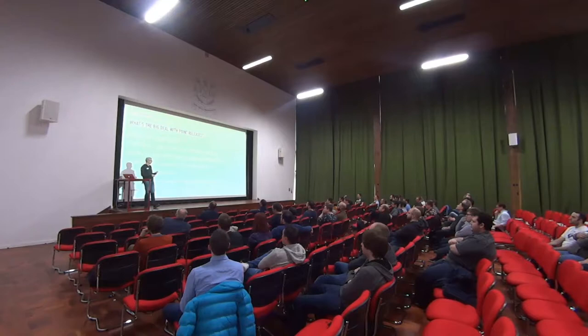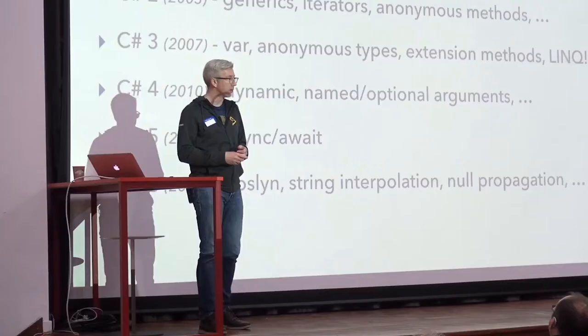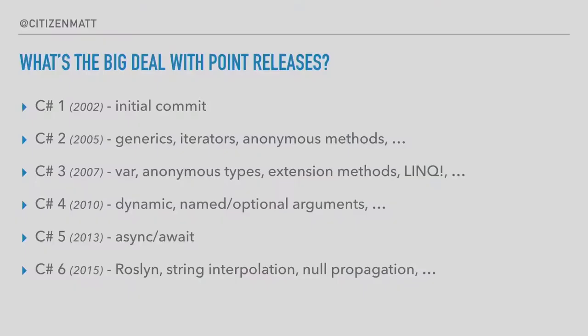If we look back at the history of C#, we'll see mostly major releases. C# 1 in 2002, then C# 2 in 2005 with generics and so on. C# 3 was two years later — arguably the best in the series, clearly the Prisoner of Azkaban of the C# world. VAR, anonymous types, extension methods, combined with anonymous methods gave us a really elegant design for LINQ. It's really, really nice. Clearly the best.